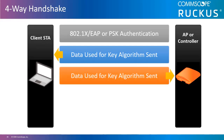This is followed by the client sending its NONCE called the SNONCE, or supplicant's number used once. After the exchange of these two messages, both the client and the access point will have the same information and will be able to generate the same unicast encryption key.